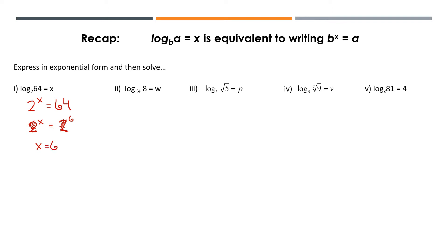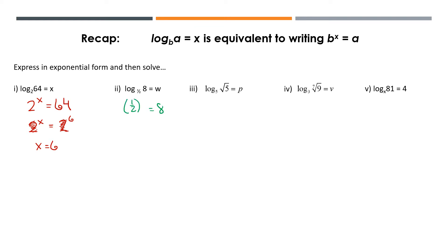Next one. We're converting to exponential form. The base is 1/2 to the power of w equals 8. The reason I put brackets there — if I didn't have brackets around the 1/2, that would technically say the w is only attached to the 1, like saying 1 to the power of w over 2, and that's not right. The power of w has to be applied to the entire base. So 1/2 to the power of w.